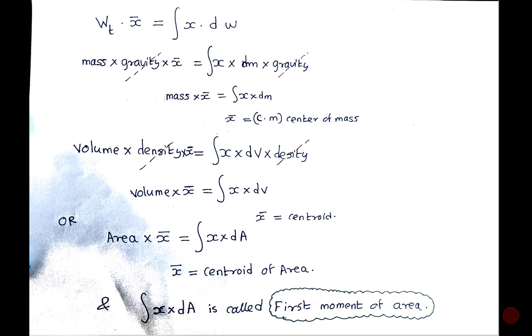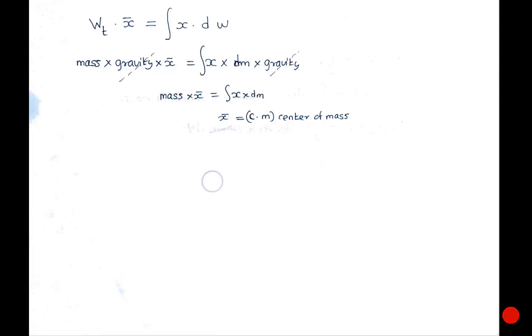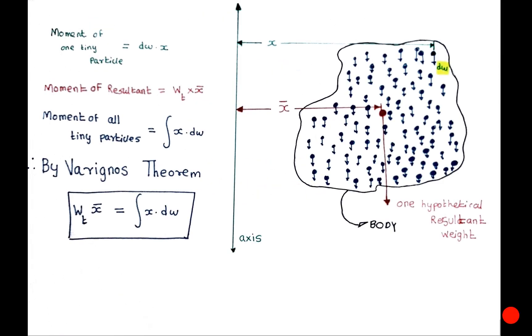Now further, I will have to conclude that the center of gravity deals with the distribution of weight, the center of mass deals with the distribution of mass, and centroid deals with the distribution of area.